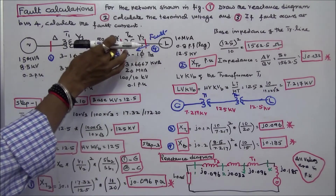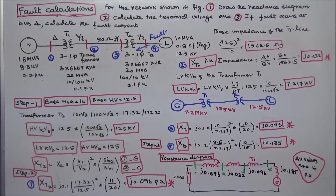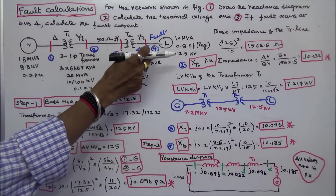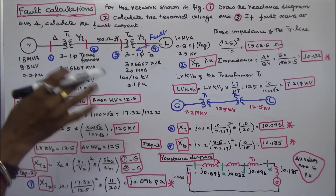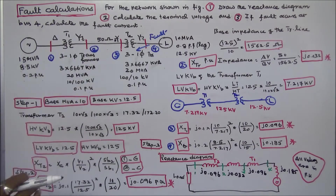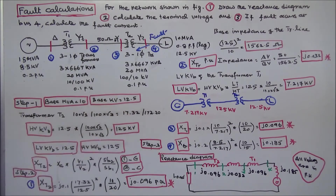The transmission voltage kV base is 125 kV. Low voltage kV base is 12.5 kV and high voltage kV base is also 12.5 kV on the load side. Step 2: I calculate the per unit reactances of the generator, transformers, and transmission line based on the chosen base MVA and base kV.